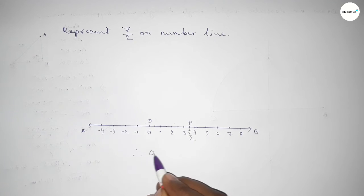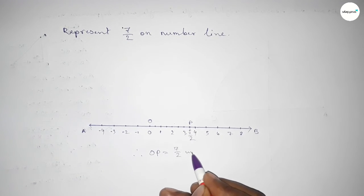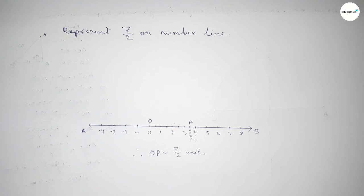Therefore, distance OP, OP equals 7 over 2 units. That's all. Thanks for watching. If this video is helpful to you.